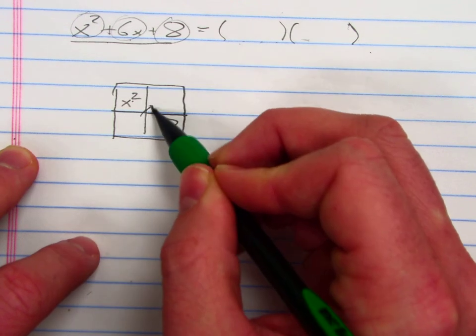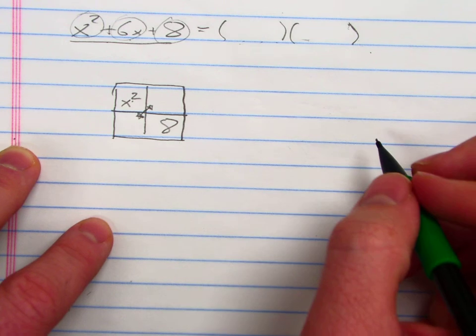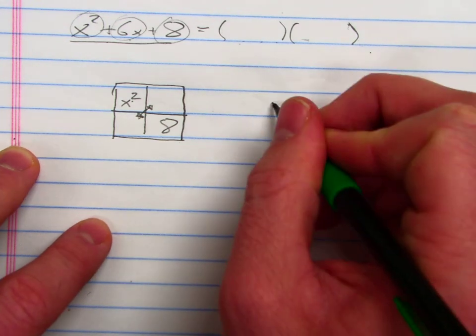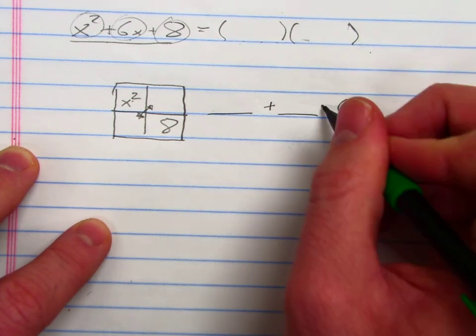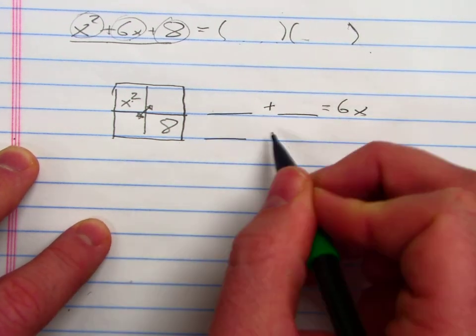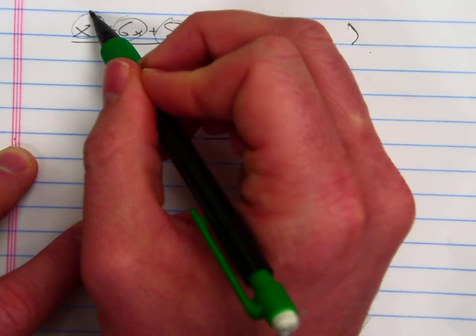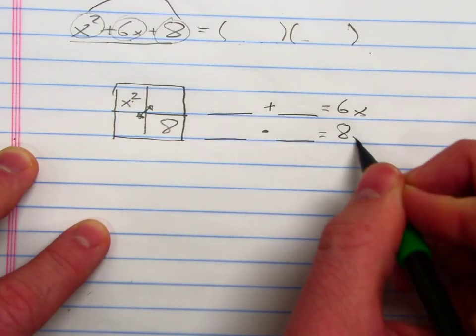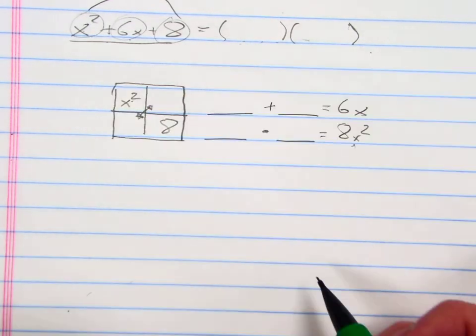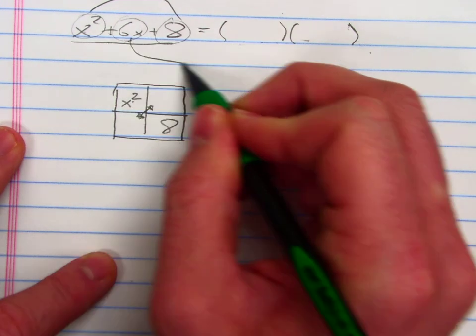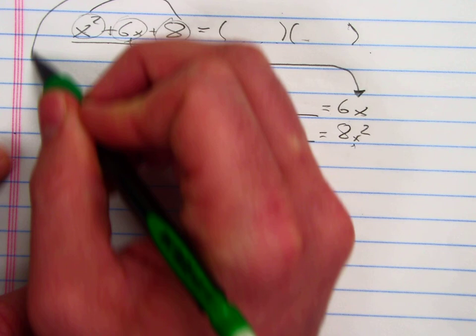But here's what I want to do. I want to find two numbers that add to make 6x, and I want those same two numbers to multiply to get 8x squared. And I came up with 8x squared because I multiplied my first and my last terms together. So my middle term is what we want to add to get, and the product of these is what I want to multiply to get.